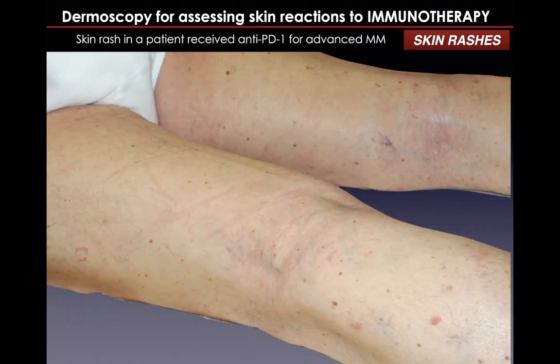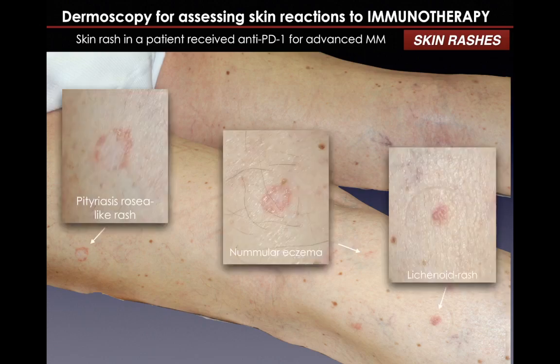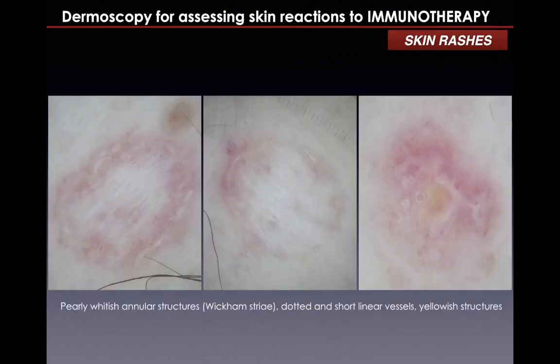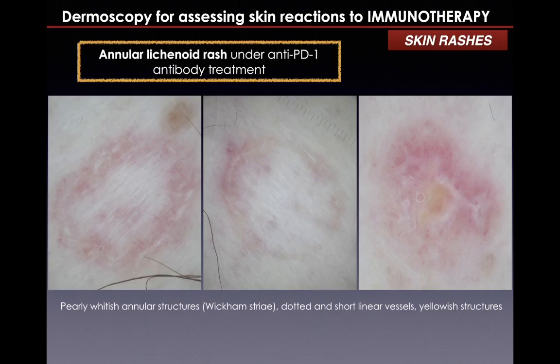Here we have another patient under anti-PD-1 treatment for advanced melanoma with a pruritic rash on the limbs resembling different conditions, including pityriasis rosea, lichen, or nummular eczema. But under dermoscopy, we have no doubt: we can see purely whitish annular structures, also known as Wickham striae, yellowish structures, and short linear vessels — clear-cut dermoscopic features of lichen.